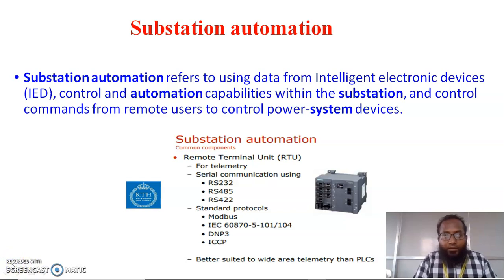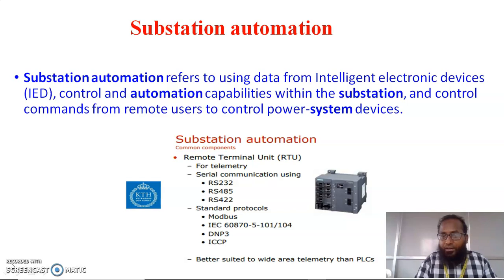Substation automation refers to using data from intelligent electronic devices (IED), control and automation capabilities within the substations, and control commands from remote users to control power system devices. Substation automation mainly consists of two units: remote terminal units and standard protocols. The remote terminal units consist of serial bus communication using RS-232, RS-485, and RS-422. The standard protocols — a protocol being a group or set of data fetched in devices — consist of Modbus, IEC, DNP3, and ICCP, mainly used in wide area telemetry as well as programmable logic control units.